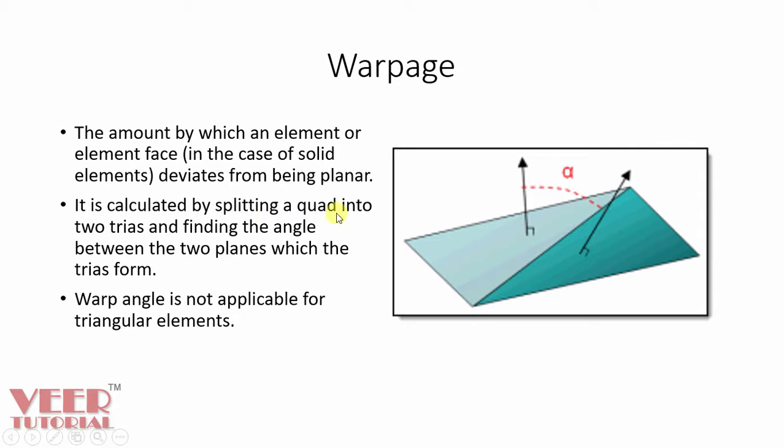It is calculated by splitting a quad element into two trias and finding the angle between them. So we have a quad element that is a quadrilateral. First of all, what we do is we divide this element into two triangles. We have one triangle and this is second triangle. And then we draw a perpendicular unit vector to them. This is the vector 1, this is the vector 2 for second triangle. And the angle between them is represented by angle alpha that is Warpage. So generally the angle up to 5 degrees is allowed as a Warpage angle in hypermesh.